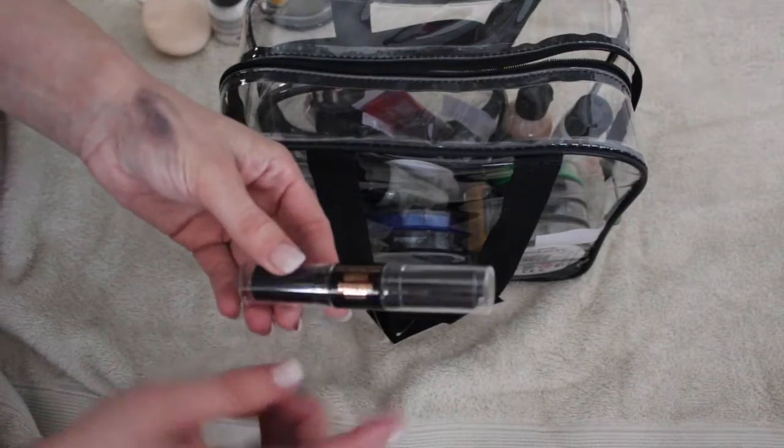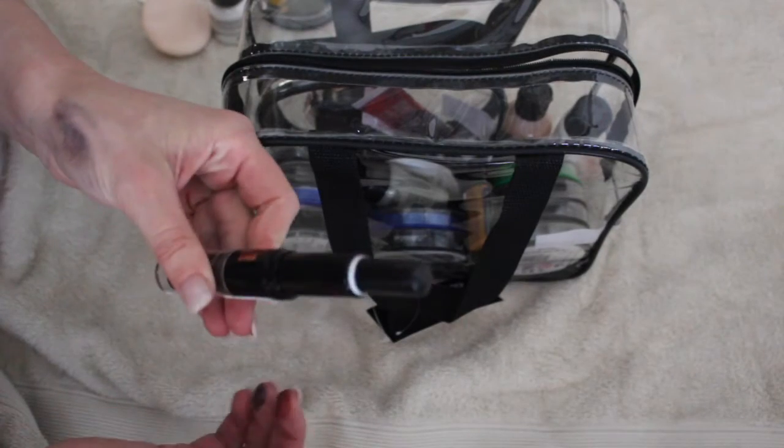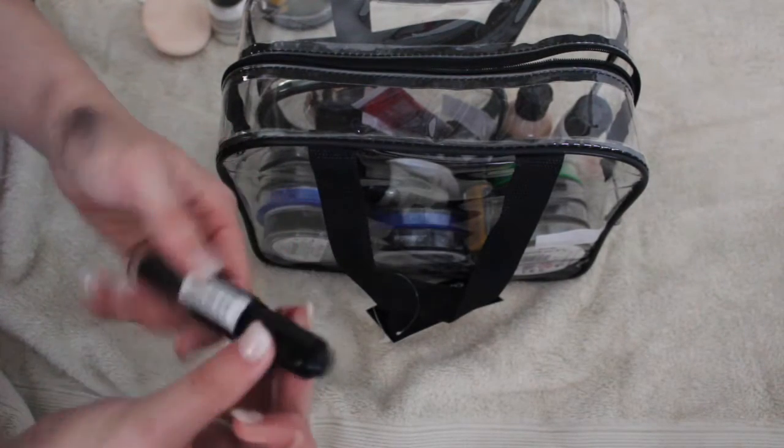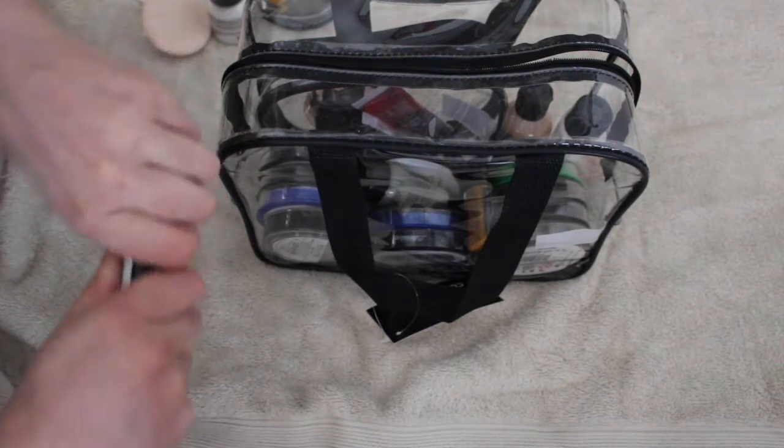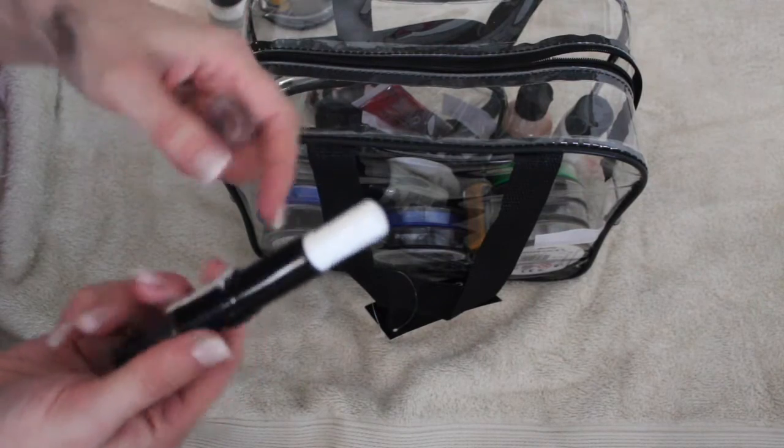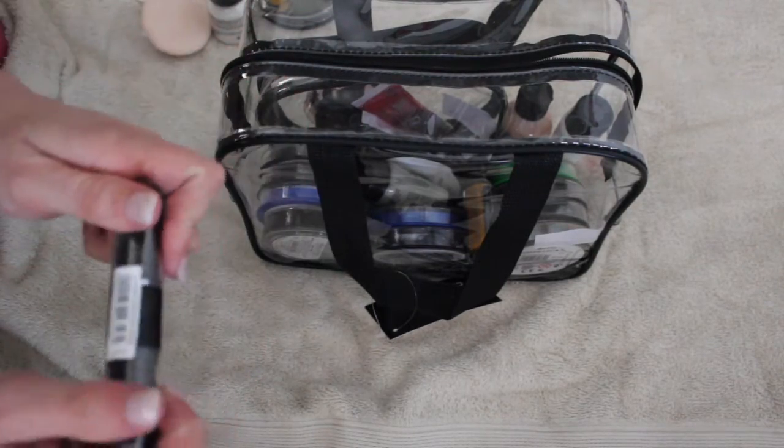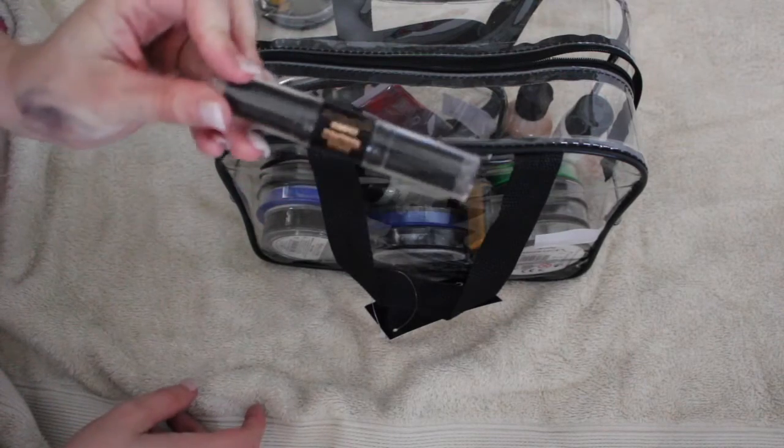Then I have a ghost contour stick by Makeup Revolution. This is quite good for like doing black detailing and stuff like that. It's got a black end and then opposite it's got a white end as well. I'm on my third one of these because I've gone through them so quick. You don't get a shed load of product, but it's pretty good when you're doing makeup on other people. I think that's only like four pounds from Superdrug.